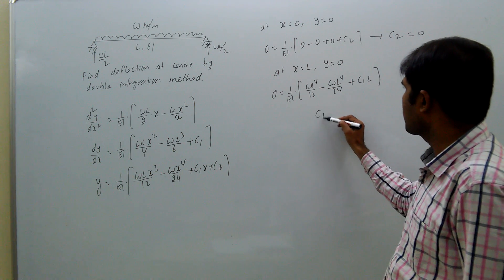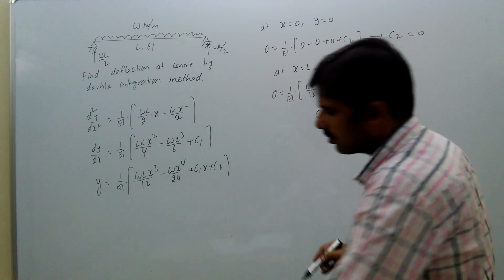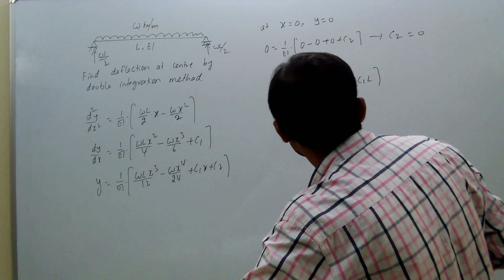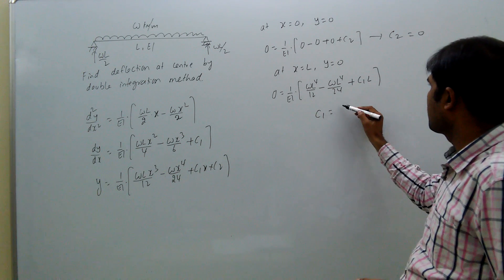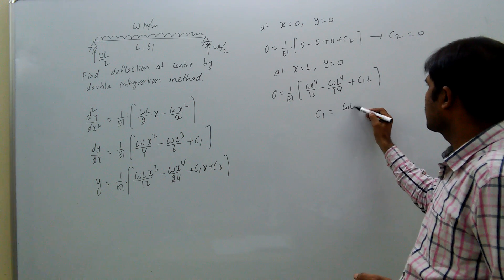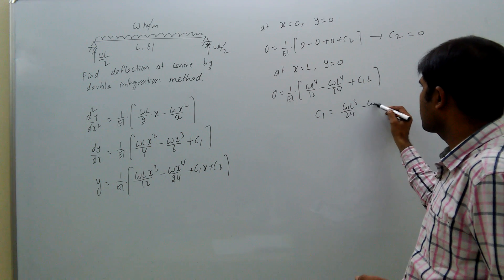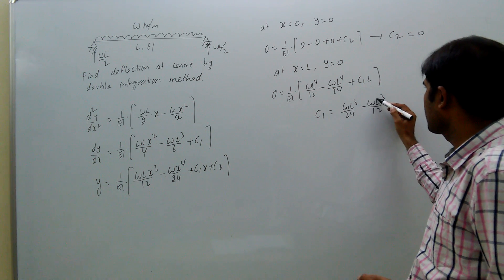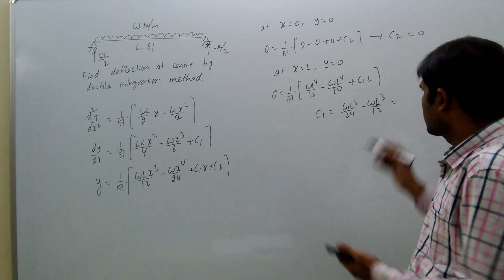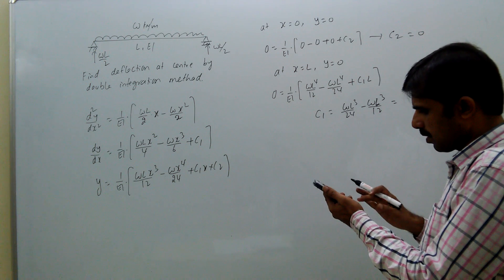From this, C1 equal to WL cubed by 24 minus WL cubed by 12, that is equal to minus WL cubed by 24.